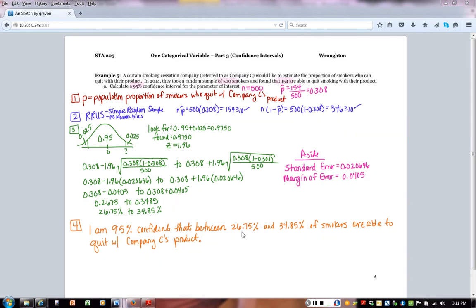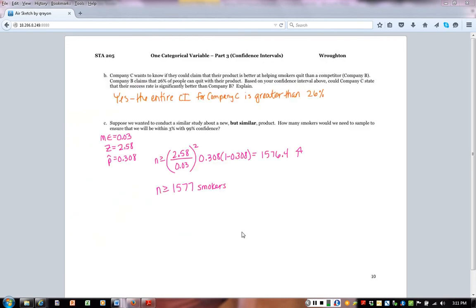Now based upon your interval, we want to know here if we could say that Company C was better than Company B. Company B has a 26% success rate. So could we say that? Well, our answer was 26.75% to 34.85%. So since our entire confidence interval is greater than the 26%, we should be able to say yes.